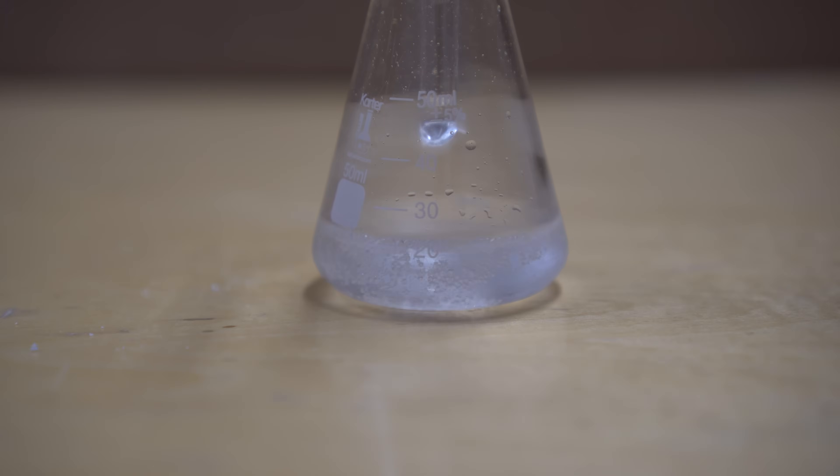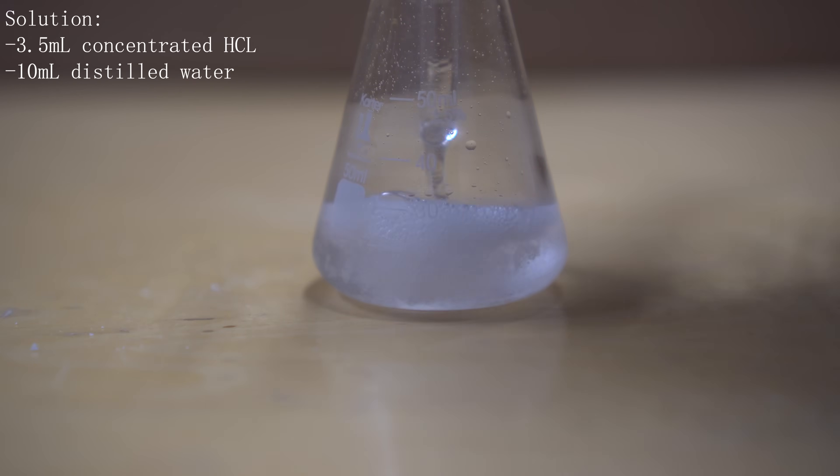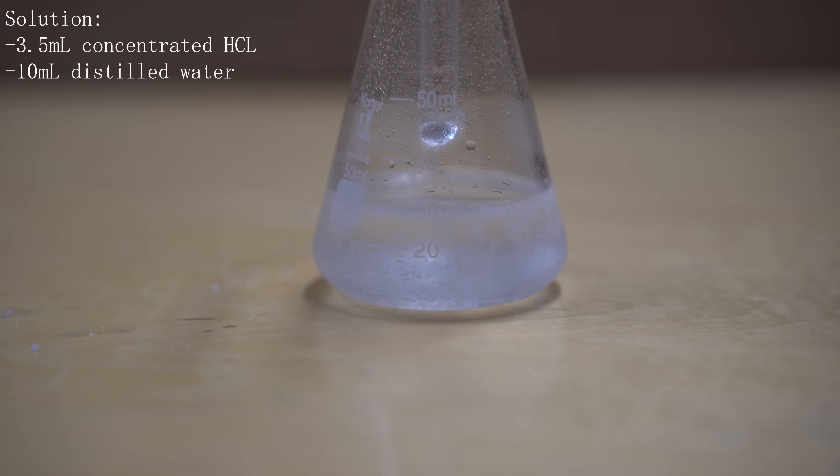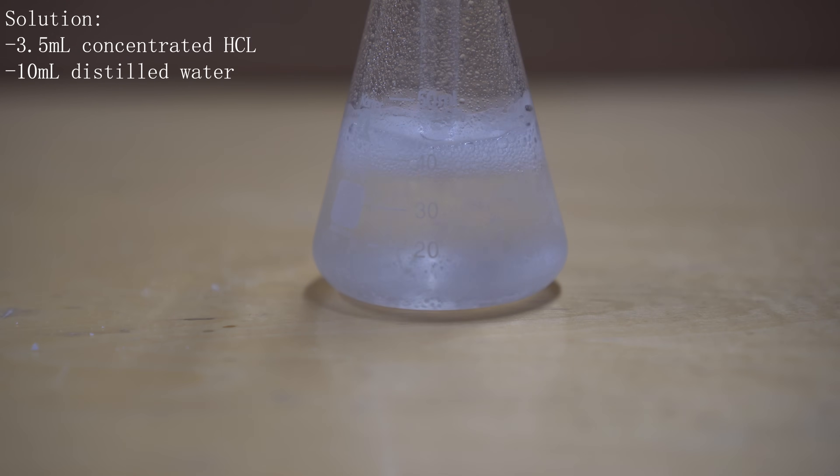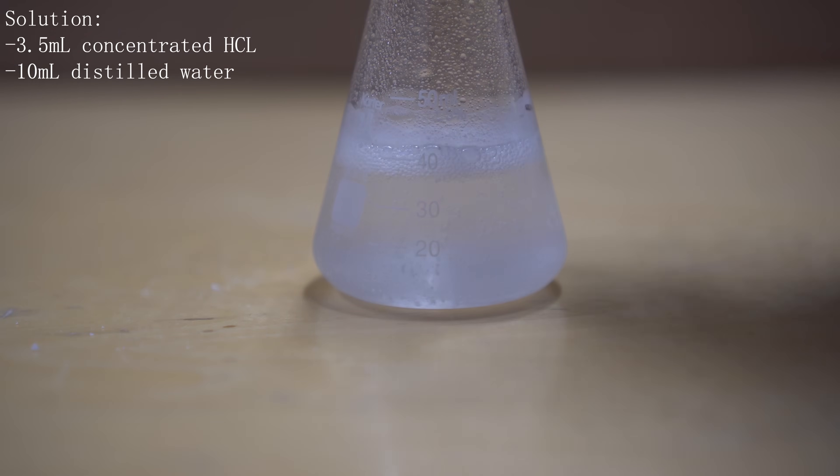The filtrate was poured into a separate 50 milliliter flask that contained an ice cold solution of 3.5 milliliters of concentrated hydrochloric acid and 10 milliliters of distilled water. The purpose of this is to precipitate out the aspirin from earlier as the base deprotonated the carboxylic acid into acetylsalicylic salt, making it more soluble in water. Now that the filtrate is being put into an acidic environment, it will make the aspirin insoluble and precipitate out.